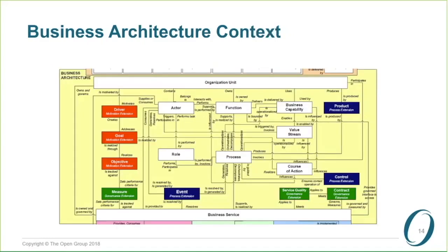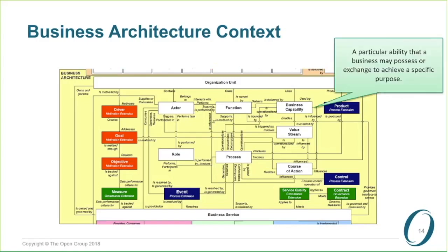Here is the context for the work we've done on business architecture. One important change we've made is we've tightened up on terminology. We have the word 'capability,' and what we've done now is explicitly identified an ability that something owns within a business context, introducing the term 'business capability.' A business capability is a particular ability that a business may possess or exchange to achieve a specific purpose, and it is clearly linked to the organization because a business function has the ability to deliver business capabilities.